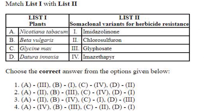Matching plants with somaclonal variants for herbicide resistance: Nicotiana tabacum — glyphosate (A3); Beta vulgaris — imidazolinone (B1); Glycine max — imazethapyr (C4); Datura innoxia — chlorosulfuron (D2). The answer is option 1: A3, B1, C4, D2.